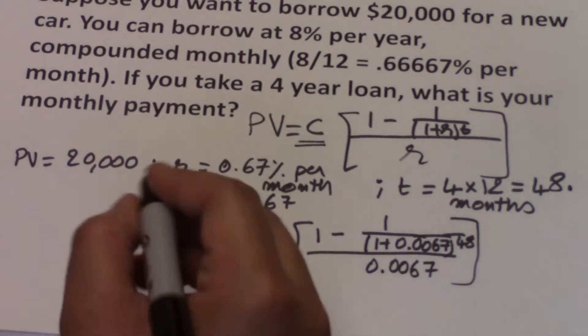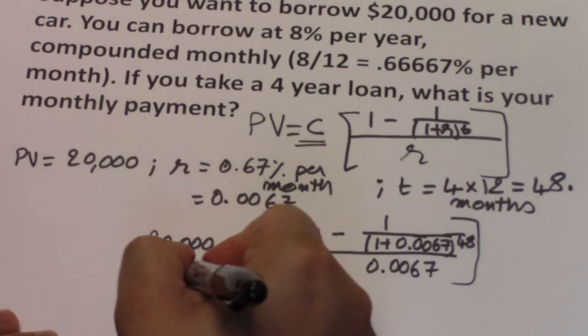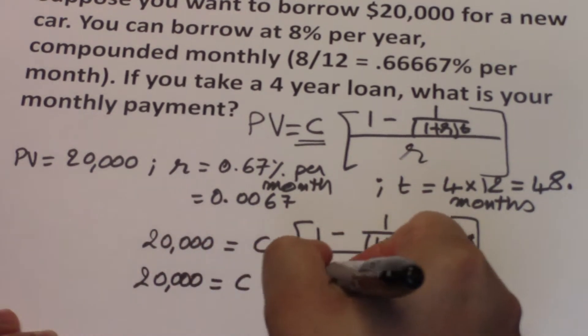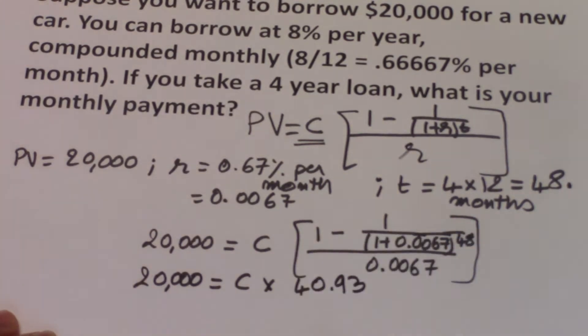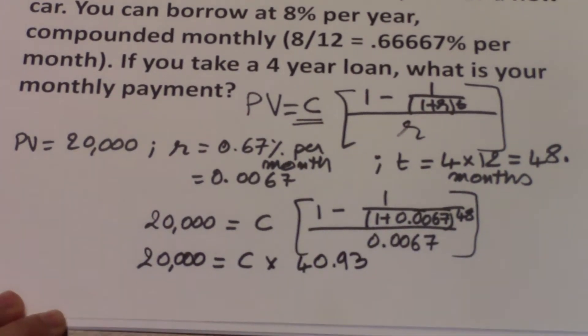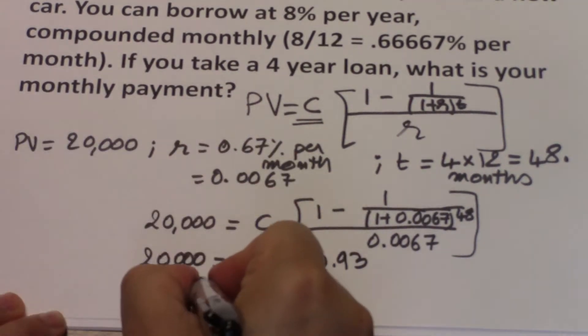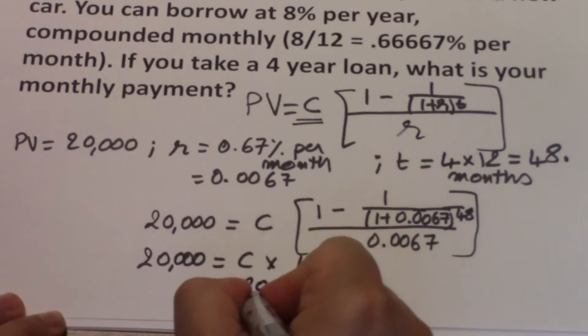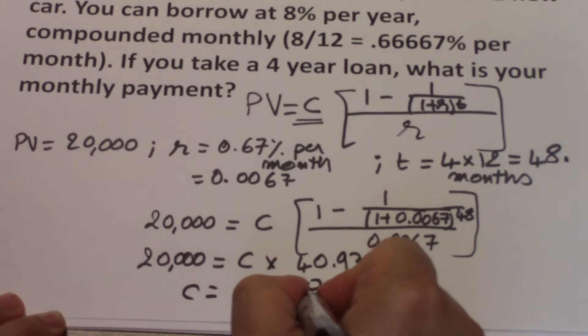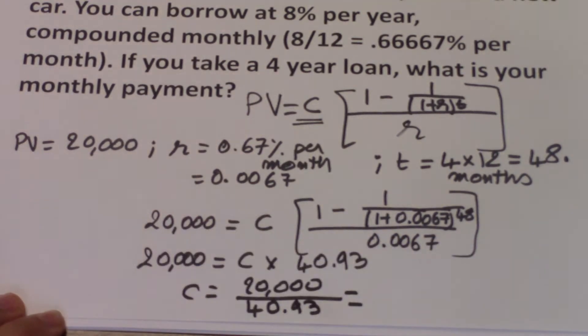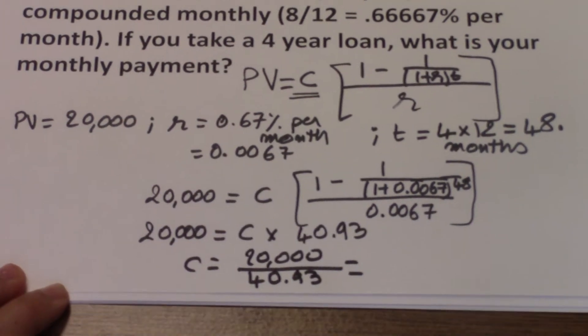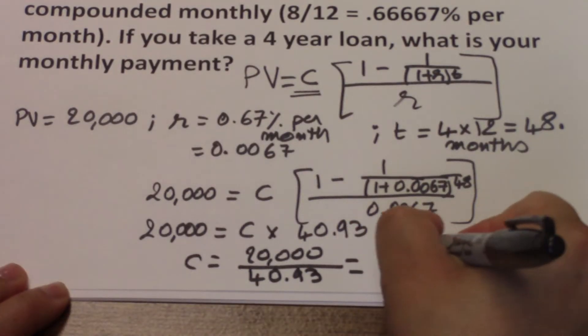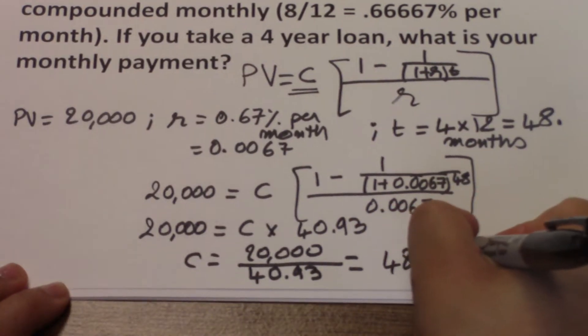So 20,000 equals C times 40.93. Rearrange the formula: C equals 20,000 divided by 40.93. If you do the calculation, you'll find that it's about 487.92.